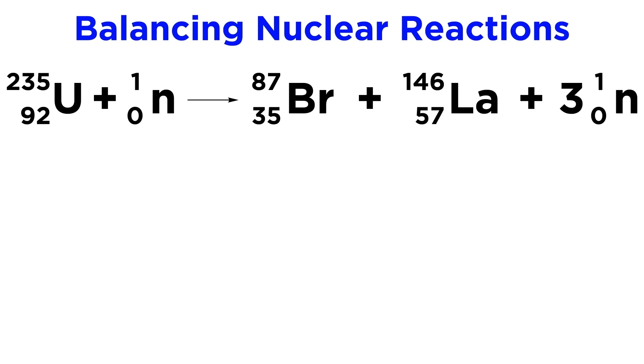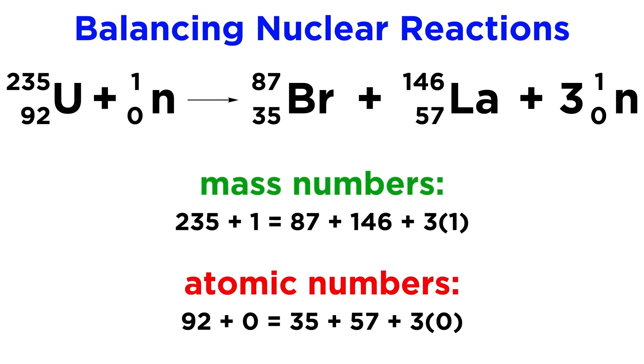Additionally, looking at this reaction, we see that if a uranium-235 nucleus is bombarded by a single neutron, it will split up into a bromine-87 nucleus, a lanthanum-146 nucleus, and three other neutrons. Again, the masses and the charges are balanced. So remember that when writing nuclear reactions, we need both the mass numbers and charges to add up to the same value on both sides of the equation, just like these four examples.